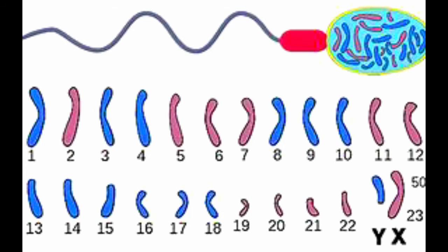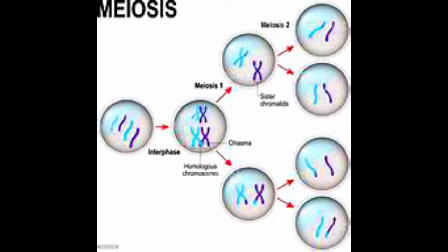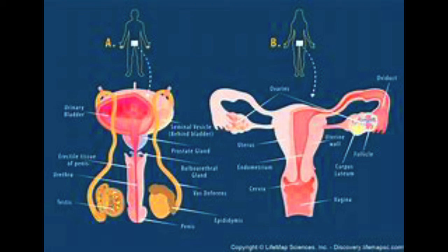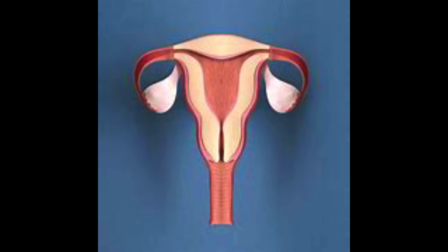In order to make these gametes, a cell has to first undergo meiosis. The first thing to remember is that meiosis only takes place in reproductive organs. In humans, that's the testes in males and ovaries in females.